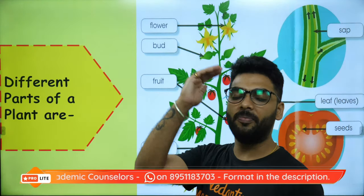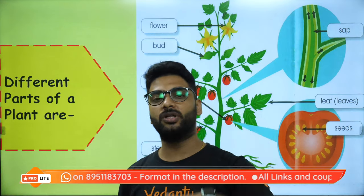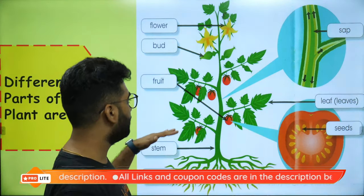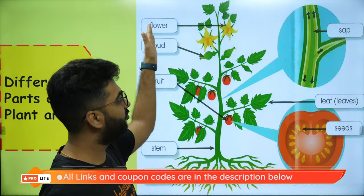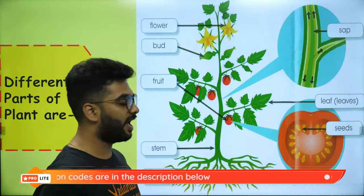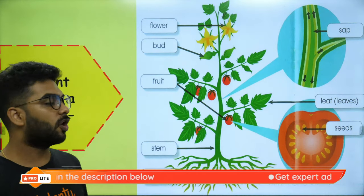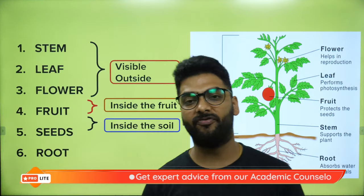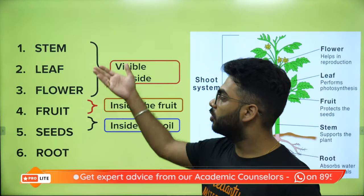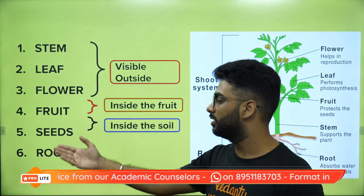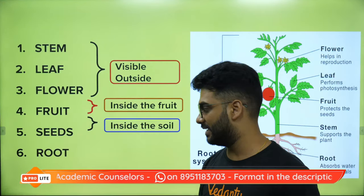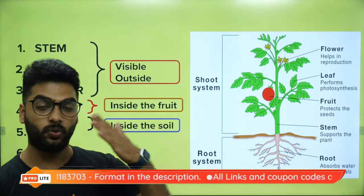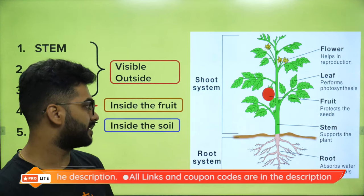A plant has two parts: the part above the ground called the shoot, and the part below the ground called the root. The shoot includes the stem, fruit, bud, flower, and leaves. The root system has two types: tap root and fibrous root. The shoot system is above the ground, and the root system is below the ground.